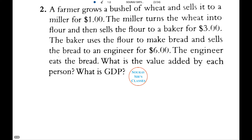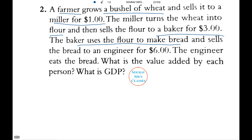Now we will calculate a GDP. We are given a simple economy: a farmer grows a bushel of wheat and sells it to a miller for $1. The miller turns the wheat into flour and sells the flour to a baker for $3. The baker uses the flour to make bread and sells the bread to an engineer for $6. The engineer eats the bread. What is the value added by each person?